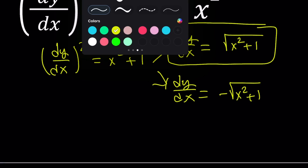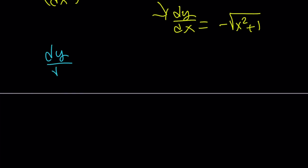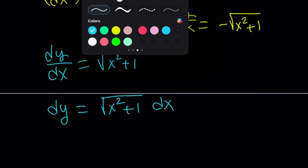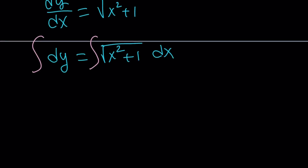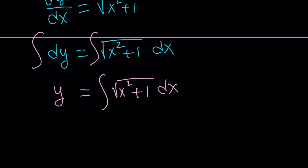Let's go ahead and proceed. What are we going to do to solve this equation? We can first go ahead and separate the variables — put the x's on the same side. Then we're going to integrate both sides. Since this is a separable equation, it's very easy to solve. The integral of dy with respect to y is going to be y. So we need to work on the integral of √(x² + 1).